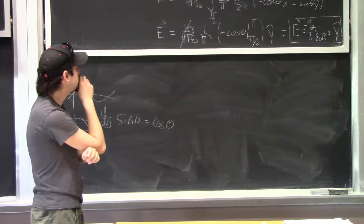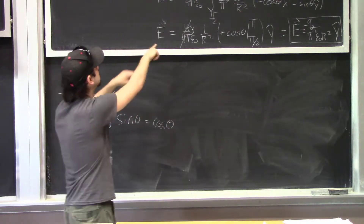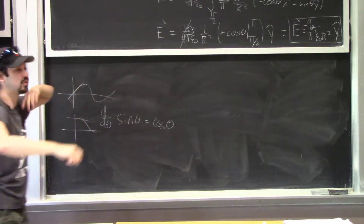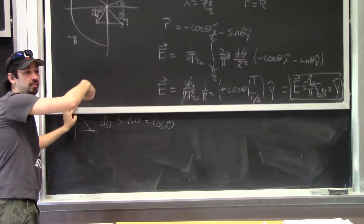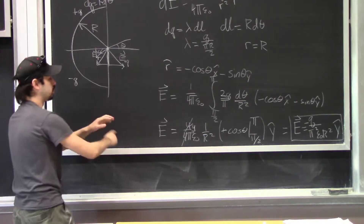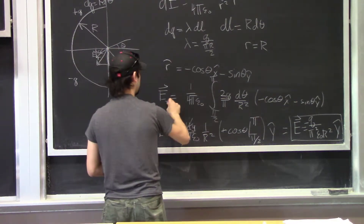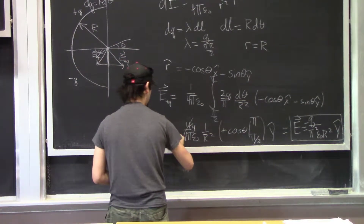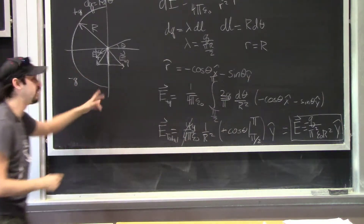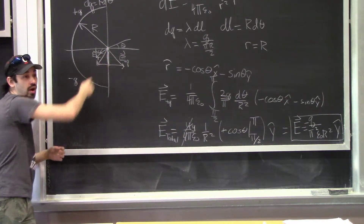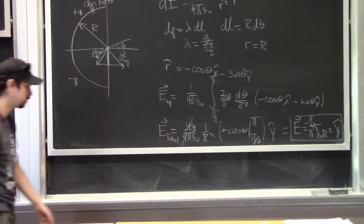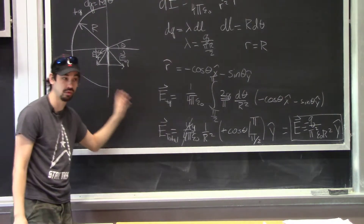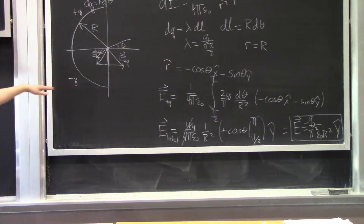Student question: why is it 4Q and not 2Q? It's because of the symmetry argument. I said for the total electric field — this is just the plus Q arc — I doubled it because I have two pieces contributing in the Y direction. That saved me from setting up a second integral because I recognized something about the symmetry.